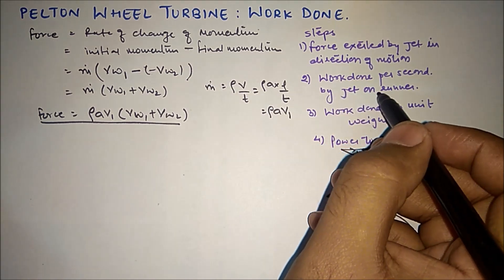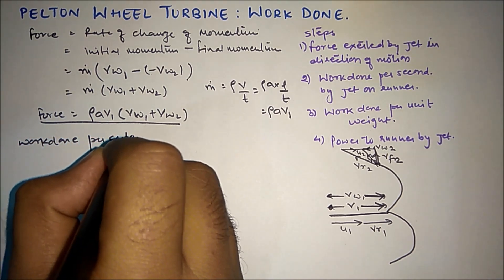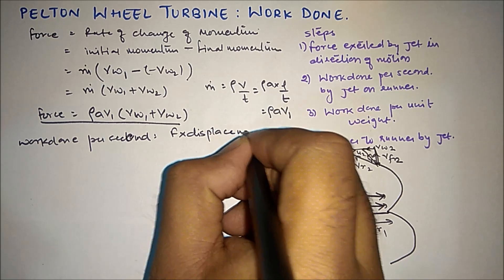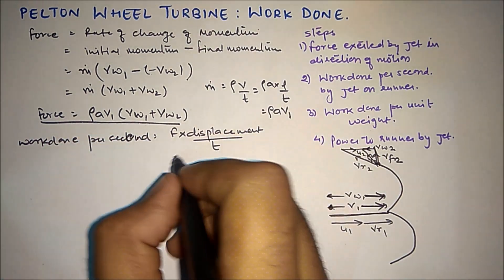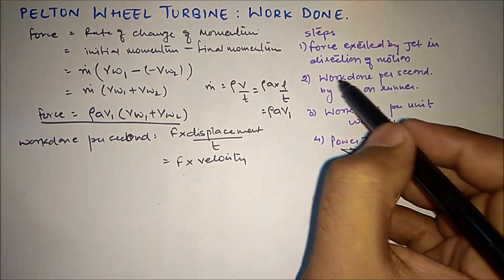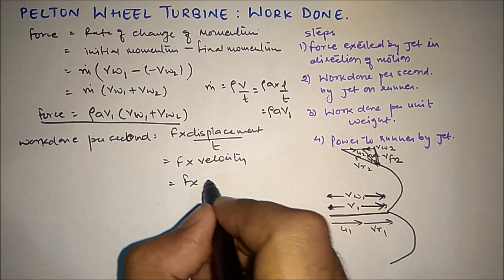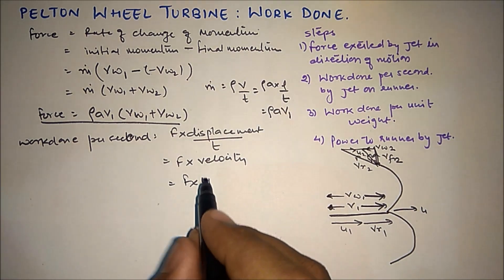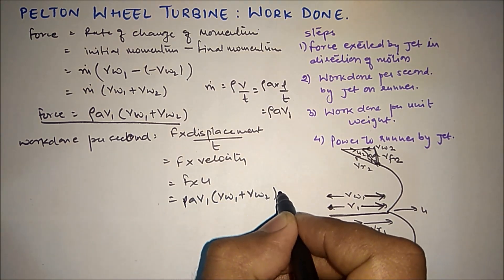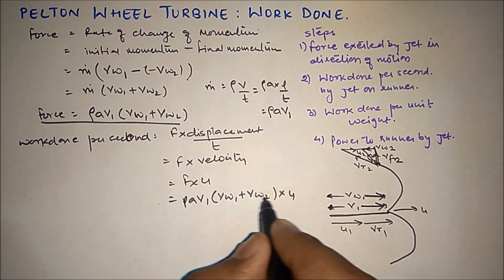Now we find the work done by the jet on the runner per second. Work done is force into displacement; per second means we divide by time, and displacement over time is velocity. Since we need work done on the runner, we use the velocity of the runner, U. So work done per second equals rho*A*V1*(Vw1 + Vw2)*U.